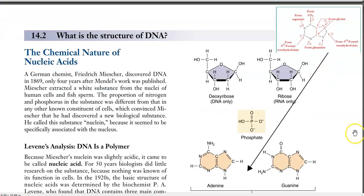In this lecture, we will try to understand the basic structure of the nucleic acids. The nucleic acid present in living organisms is of two types. One is DNA, deoxyribose nucleic acid, and another one is RNA, ribose nucleic acid. Both these two different types of nucleic acid differ based on the type of sugar that is present.